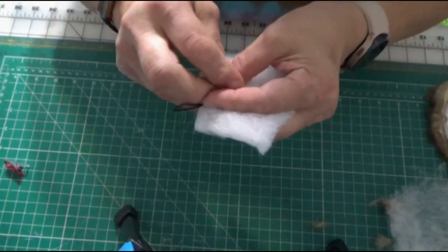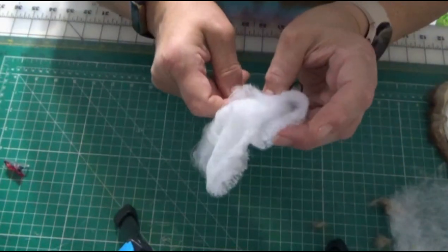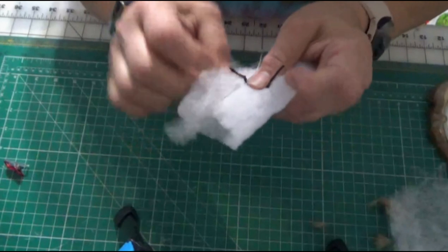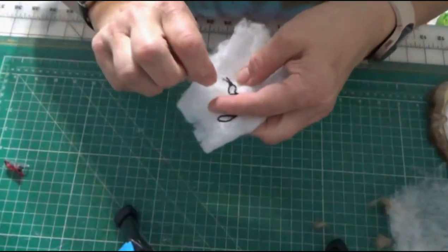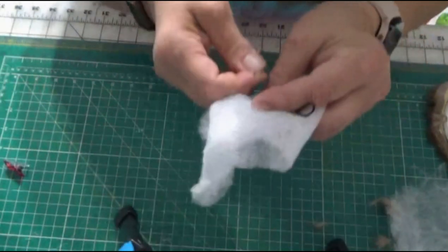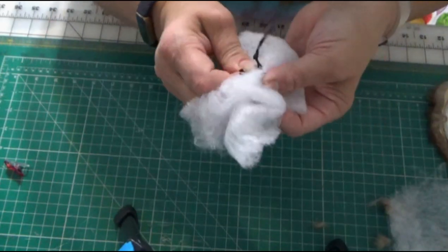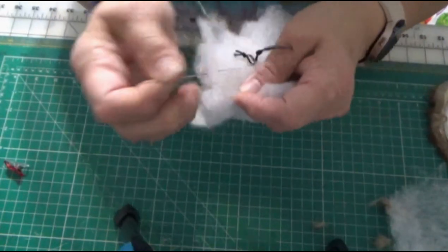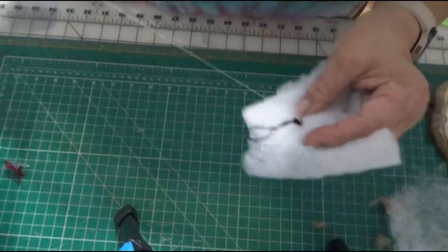I'm just going to keep going in and out of the polyfill because I want it to stay on the stuffing. So when I go to put it in the pom-pom and they use the elastic, it won't pull out. So I do this a bunch of times, securing it all around.